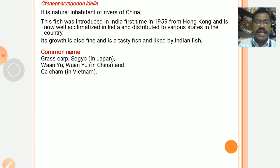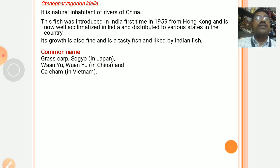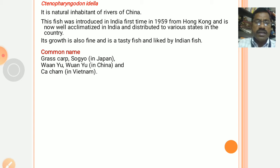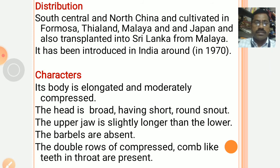It is a native of China. This fish was introduced in India for the first time in 1959 from Hong Kong and is now well acclimated in the Indian climate and distributed in various states of our country. Its growth rate is also fast and it is a tasty fish. Common names include grass carp, sogyo, wainhu, and kya cham.